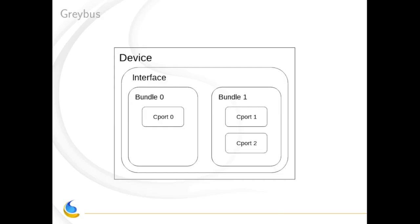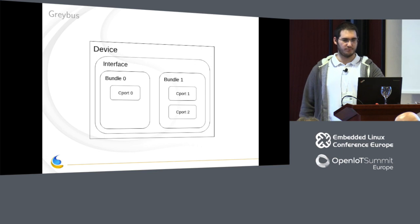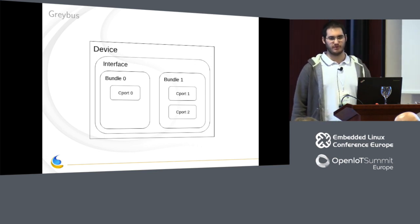For IoT we only need one interface. For Project Ara we had the ability to have one or more interfaces because some modules had two physical interfaces, so we could use two UniPro interfaces to improve performance or do dedicated things. Here for IoT we only use one interface. The most important part of the Greybus description is the bundle — the bundle is the place where we define what class we want to use. Bundle 0 is the only mandatory one: it's the control bundle.